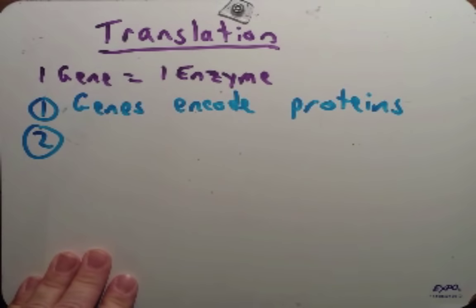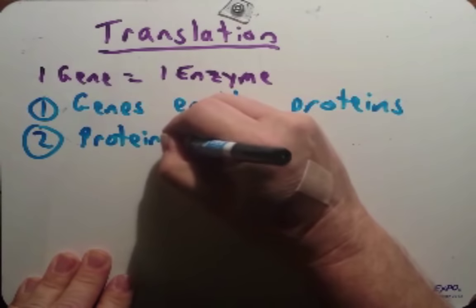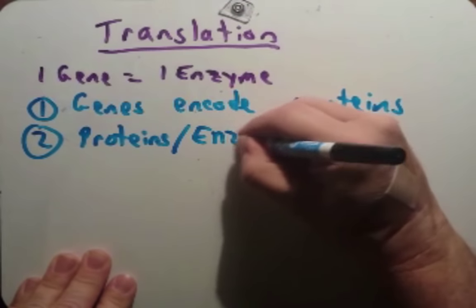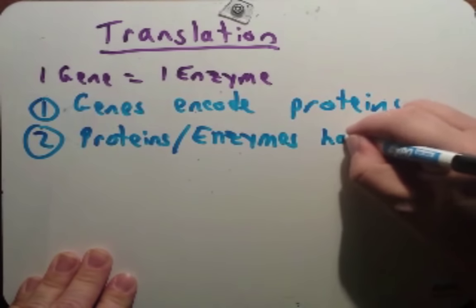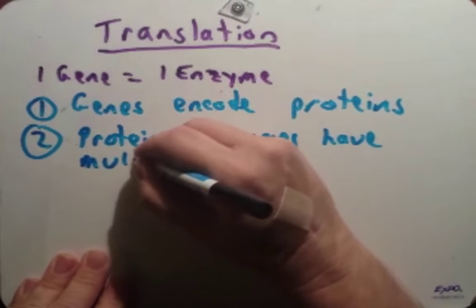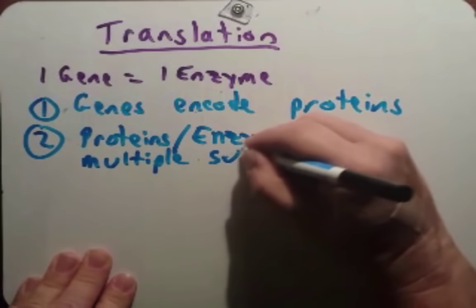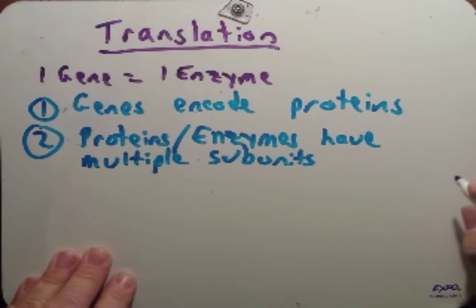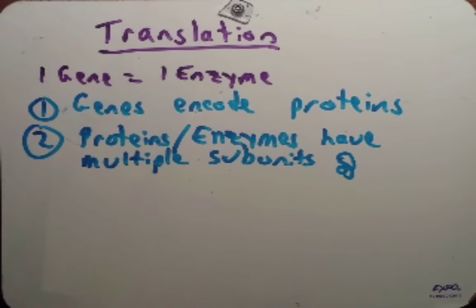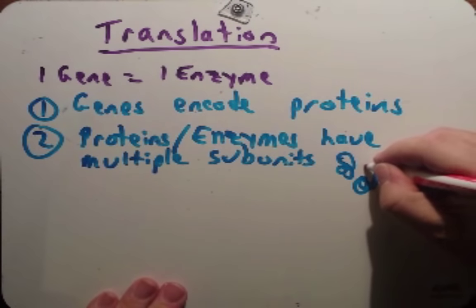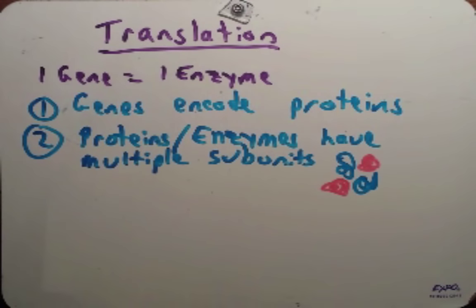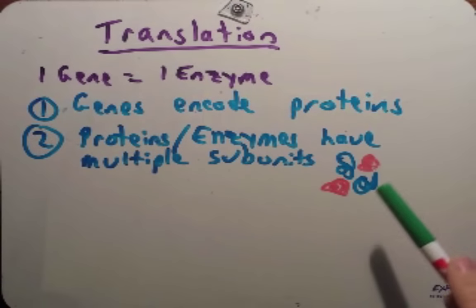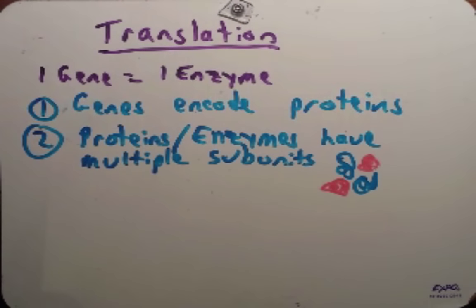Many proteins — or enzymes, I should say — contain multiple subunits. For instance, the protein hemoglobin has four subunits: two are identical, coded for by the same gene, and two are coded for by a different gene. So this one protein isn't made by one gene; it's made by two genes. This red one is coded for by one gene, and this blue one is coded for by another gene.